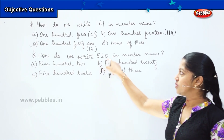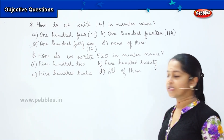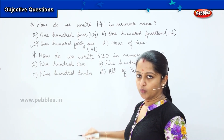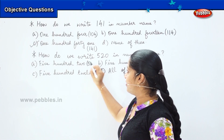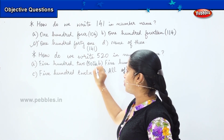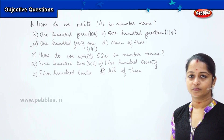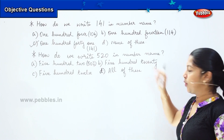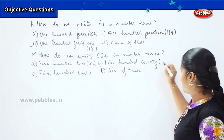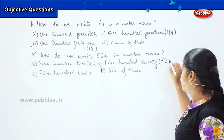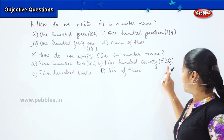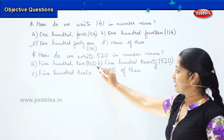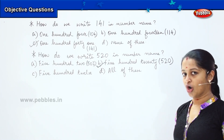My number is 5, 2, 0. The first option, 502, is written as 5, 0, 2 — that does not match. The second option, five hundred twenty, is written in numbers as 5, 2, 0 — does this match? Yes! So my right answer is option B.